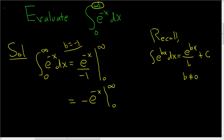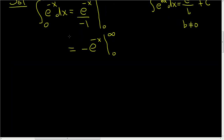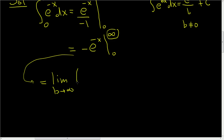All we did in this step is put the negative 1 up front to make it cleaner. Now what you do is replace the infinity with a variable — usually you use b. This equals the limit as b approaches infinity of negative e to the negative x, going from 0 to b. We just took the infinity, replaced it with b, and then let b approach infinity.